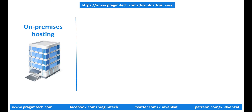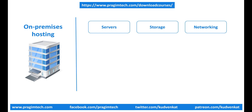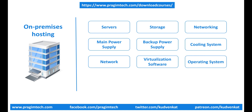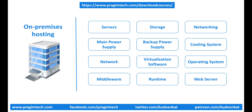With on-premise web hosting, you or your organization is responsible for managing pretty much everything. You may have to spec out and procure physical servers, storage, networking equipment, and all the related hardware. Make sure there is main power supply, backup power supply, cooling system, etc. are in place. Install and set up the network, install and configure virtualization software, operating system, any middleware or runtime components your application needs, and install and configure a web server like IIS, Apache, Nginx, etc.